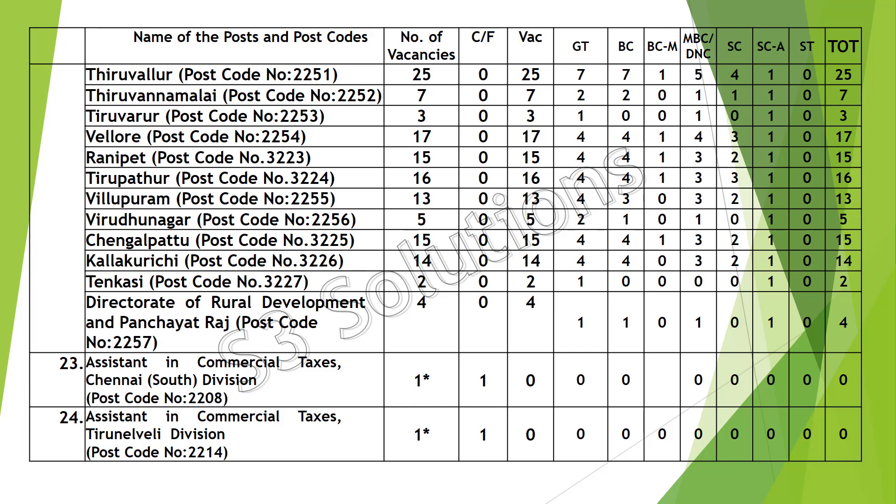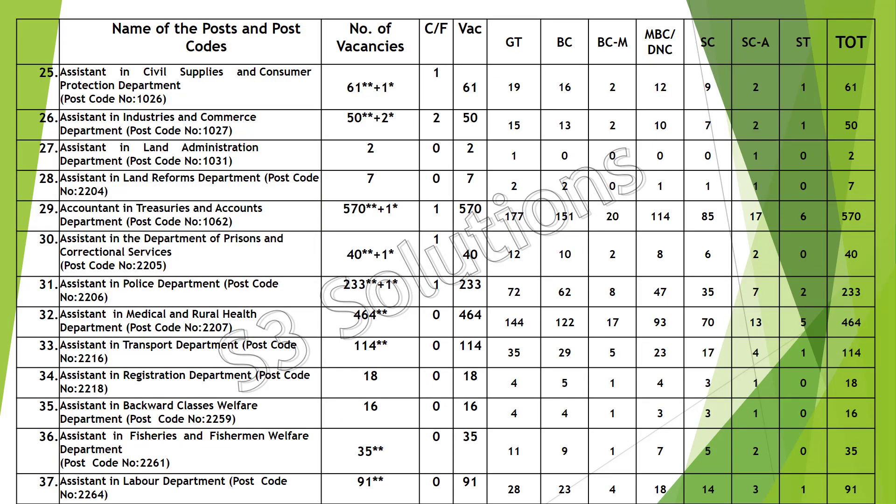Location-wise: Chennai Division, Tirunelveli Division, Assistant in Civil Supply and Consumer Protection — here are 60 vacancies. Also included are Industrial Commerce, Land Administration Department, Land Reforms Department, and Accountant in Treasury and Accounts Department.